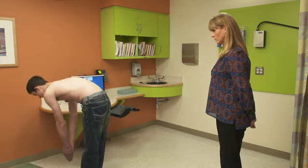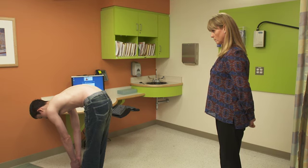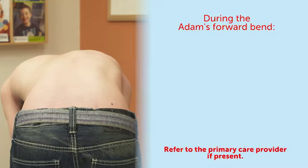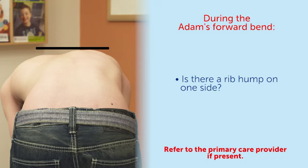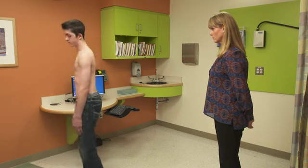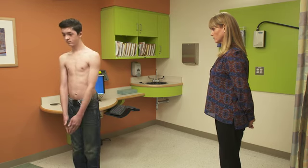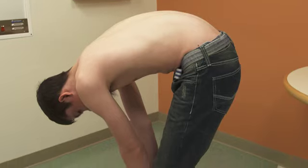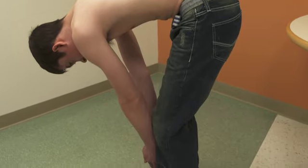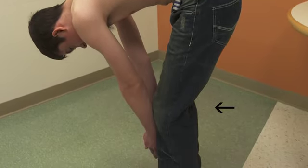Finally, the adolescent should bend forward with the knees extended into the Adam's forward bend test position. Make sure the feet are together, knees straight, the palms of the hands together, and head down. Asymmetry of the torso can best be appreciated on the horizon. The lower back can be assessed for further flexion. Use caution, as many adolescents will flex the knees while attempting to bend further due to relative tightness of the hamstrings.